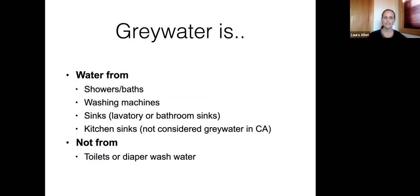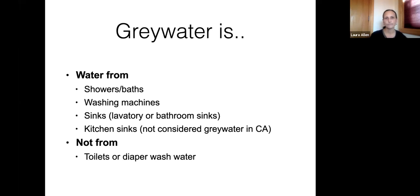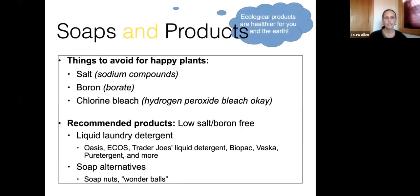Graywater is water from the washing machine, showers, and sinks. What it's not is water from toilets or diaper wash water. California currently doesn't consider kitchen sinks as graywater. So if you want to tap into other sources, you'll be tapping into showers, baths, and bathroom sinks. Whatever you put in the drain or in your washing machine is now going out to your plants, and you have complete control over that quality.